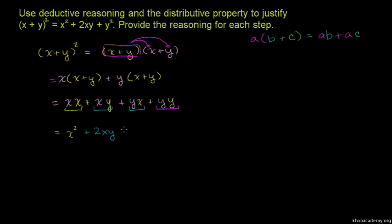This is deductive reasoning. We started with a general statement about (x + y) squared and used the distributive property with operations to prove that it equals x squared plus 2xy plus y squared. This completes our proof using deductive reasoning.